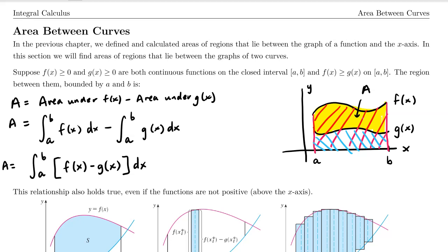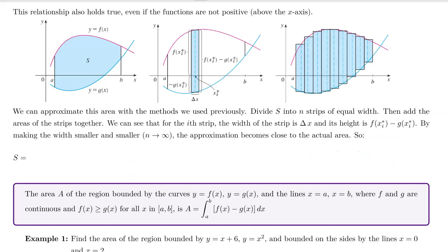It turns out this relationship holds true even if the functions are not positive or above the x-axis. Here's a graphic showing two curves f of x and g of x where g of x falls below the x-axis for certain values of x. We can approximate this area, which we're calling S, by dividing S into n strips of equal width. For the i-th strip, the width is delta x and the height is f of x sub i-star minus g of x sub i-star.